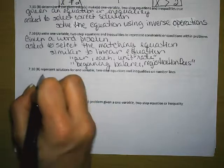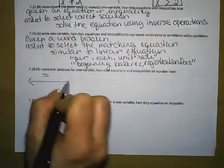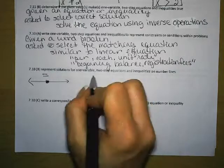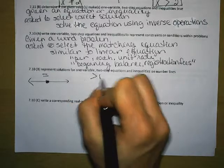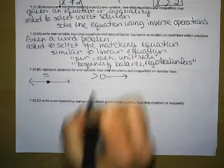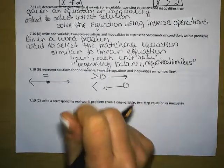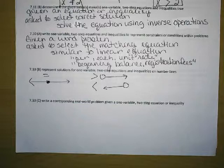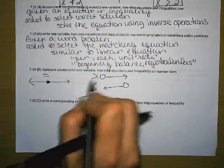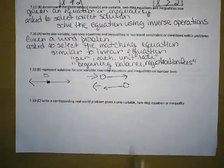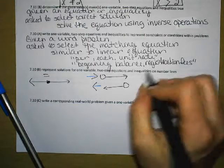7.10b represents solutions for one-variable, two-step equations and inequalities on number lines. So remember, equal to is just a dot. If it is greater than, it is open to the right. If it is less than, it is open to the left. Remember when we talked about this, you can change your inequalities into arrows to know which direction they need to go.